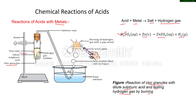Granules means small pieces. These granules increase the surface area of the zinc metal, which is why the rate of reaction becomes faster. Then we add dilute sulfuric acid to the test tube.